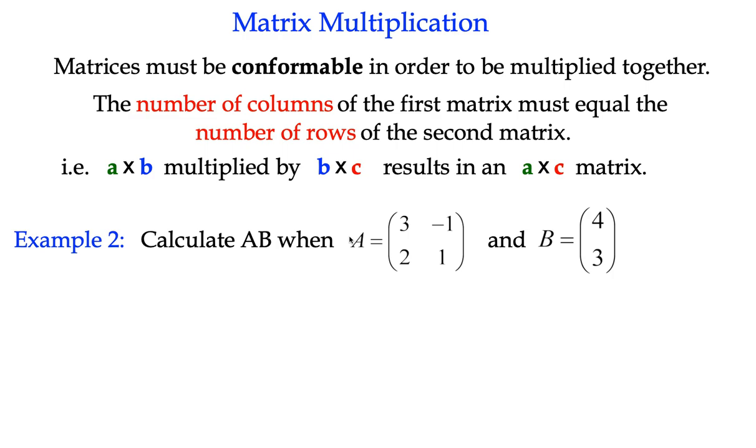We can't multiply any two matrices together. There has to be an element of what we call conformity. For matrices to be conformable, there has to be a certain correct combination of rows and columns. And the other interesting thing is that order does matter here. We'll talk a bit more about that later.